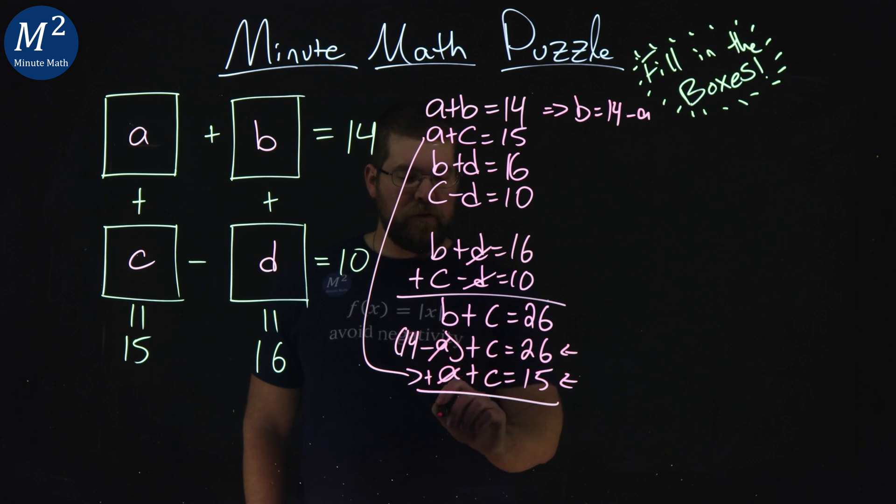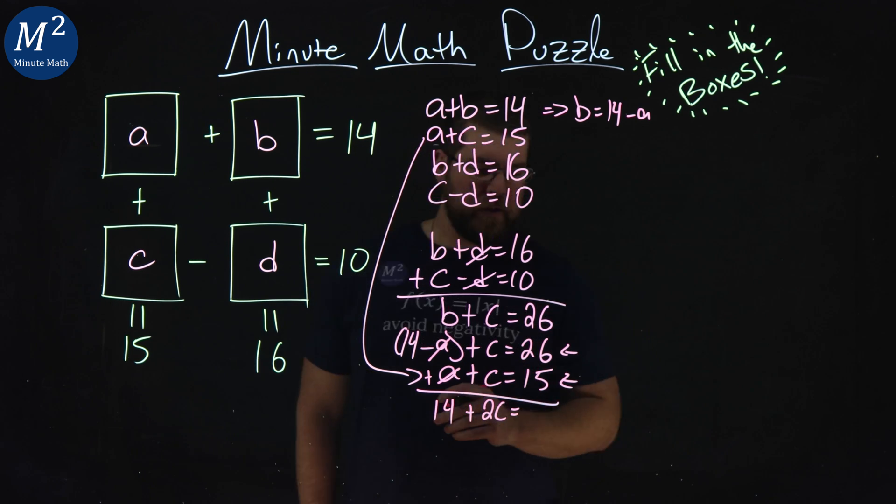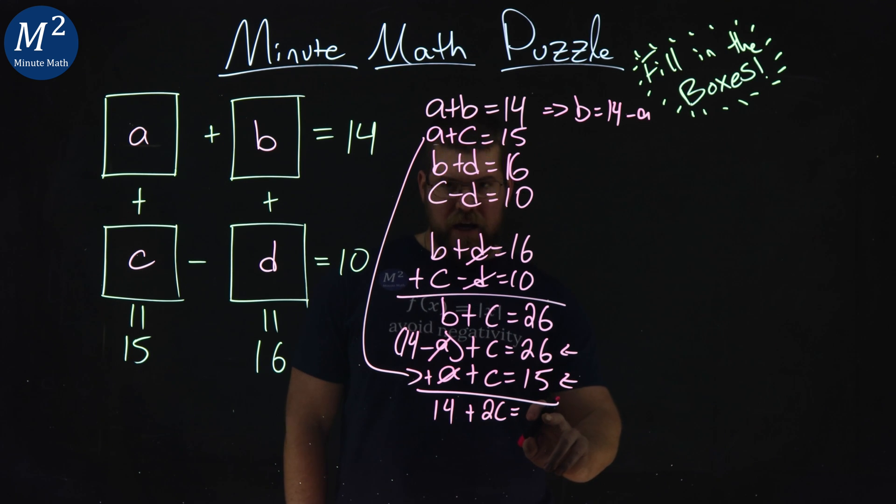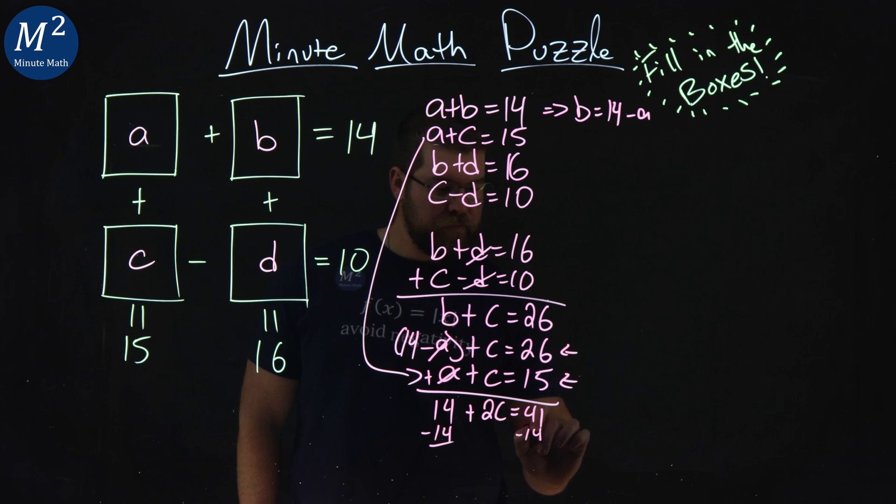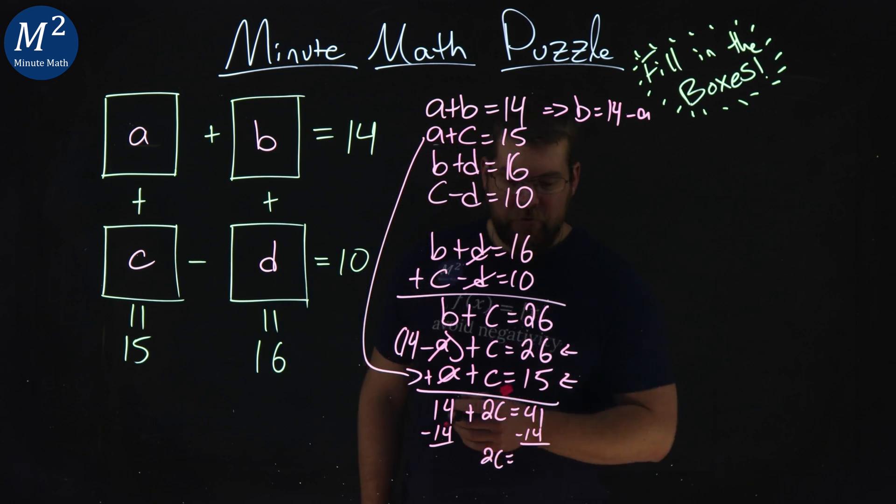Negative A and positive A cancels. I have 14 down here plus 2C is equal to 26 plus 15, which is 41. I want to subtract now 14 to both sides, and I'm left with 2C is equal to 41 minus 14.